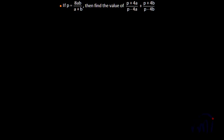In this video we are going to solve this problem using ratio and proportion and its properties. You can also solve this problem by substituting the value of p in the expression (p+4a)/(p-4a) + (p+4b)/(p-4b), but that will be a lengthier process because you will get fractions in both numerator and denominator. So we have a shortcut using ratio and proportion.